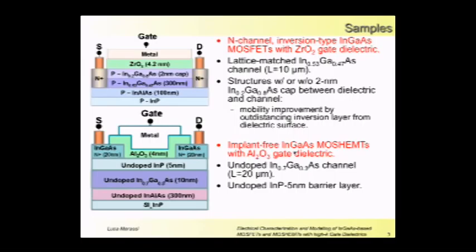We're talking about InGaAs MOSFETs with zirconia gate dielectric. For this structure we have both solutions with or without the capping layer interposed between the channel and the zirconia. This solution increases mobility by separating, by outdistancing the inversion layer from the highly defective interface of the high-K.